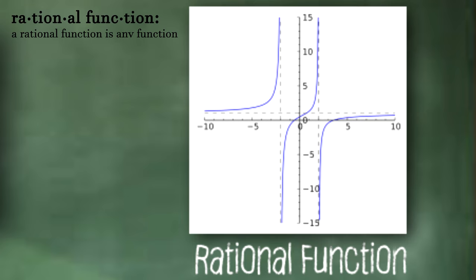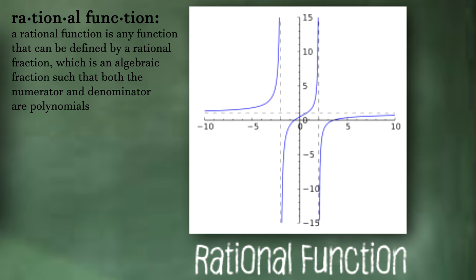Now let's take a look at the rational function graph. The dictionary definition of a rational function states that a rational function is any function that can be defined by a rational fraction, which is an algebraic fraction such that both the numerator and denominator are polynomials.